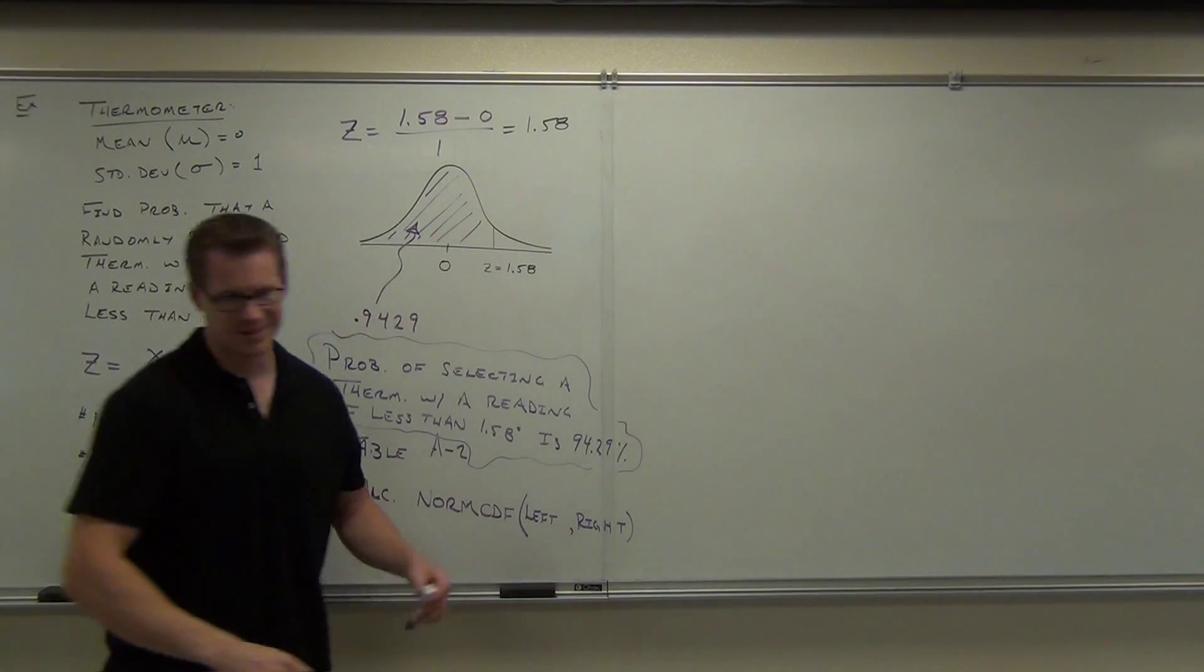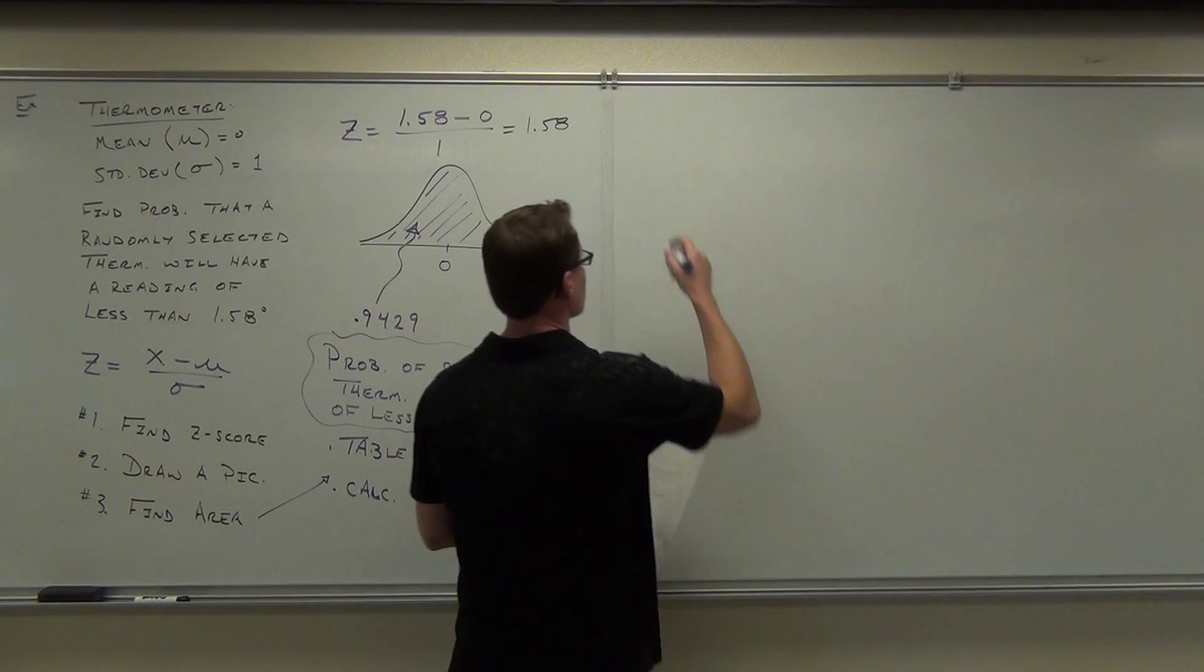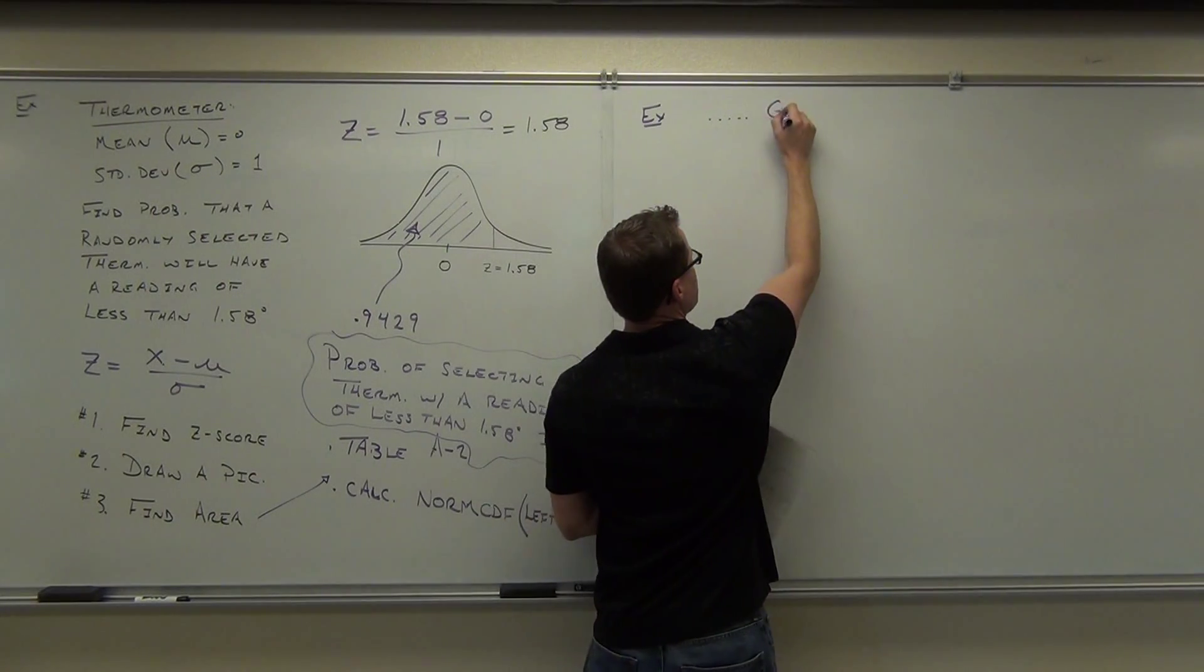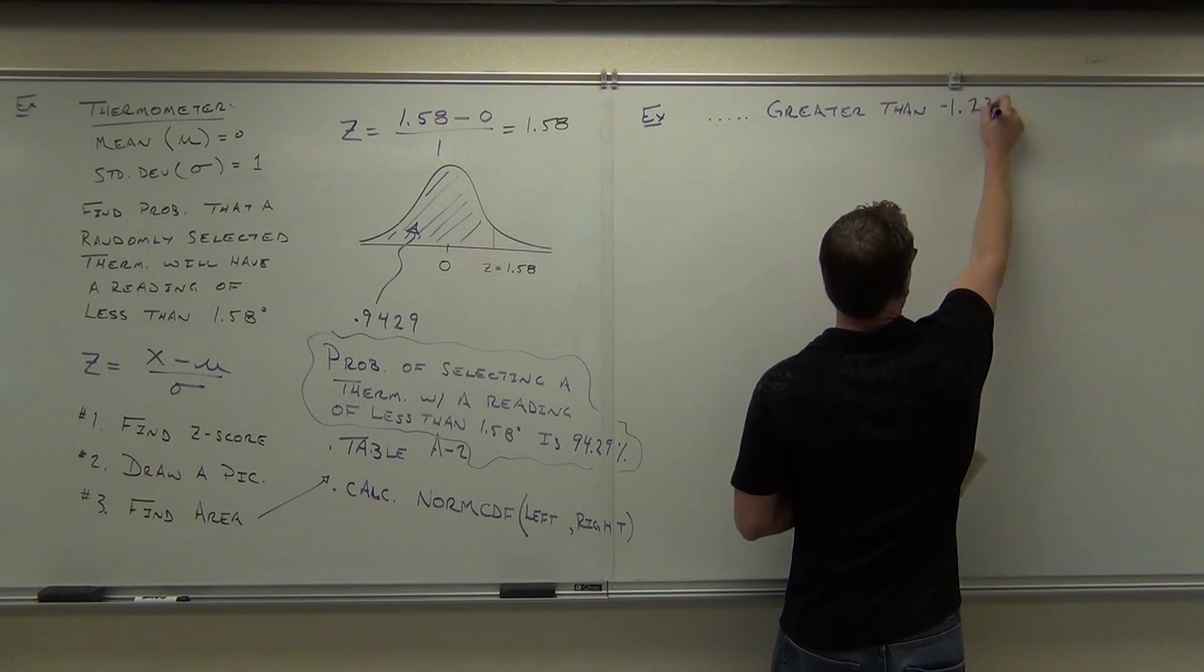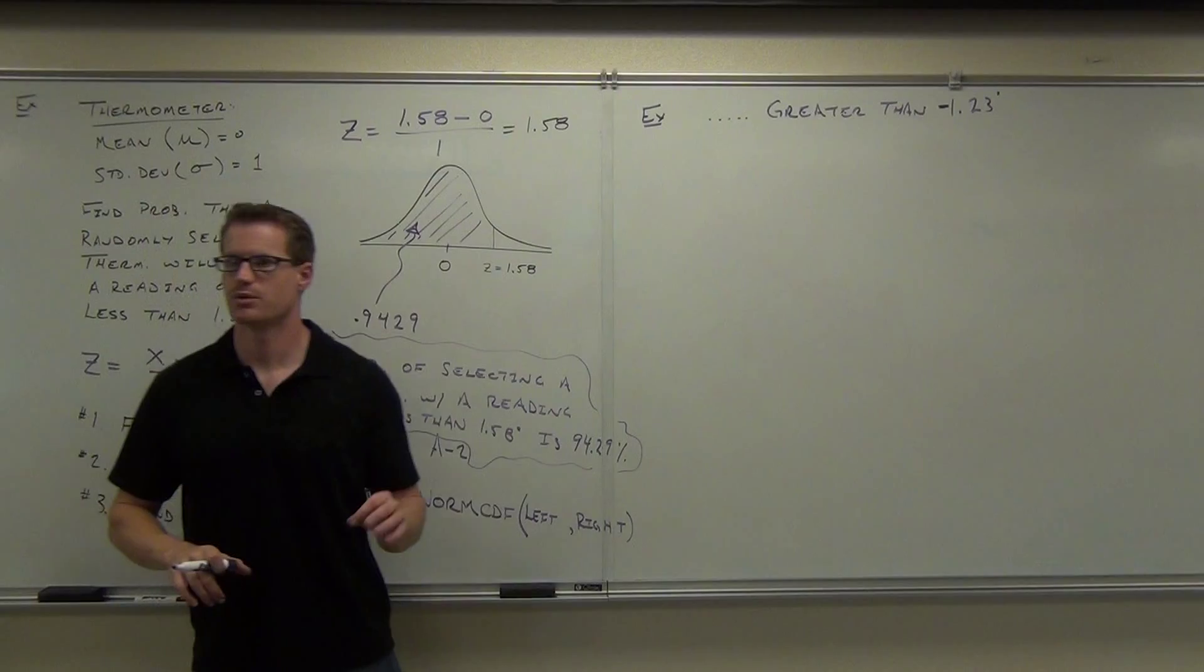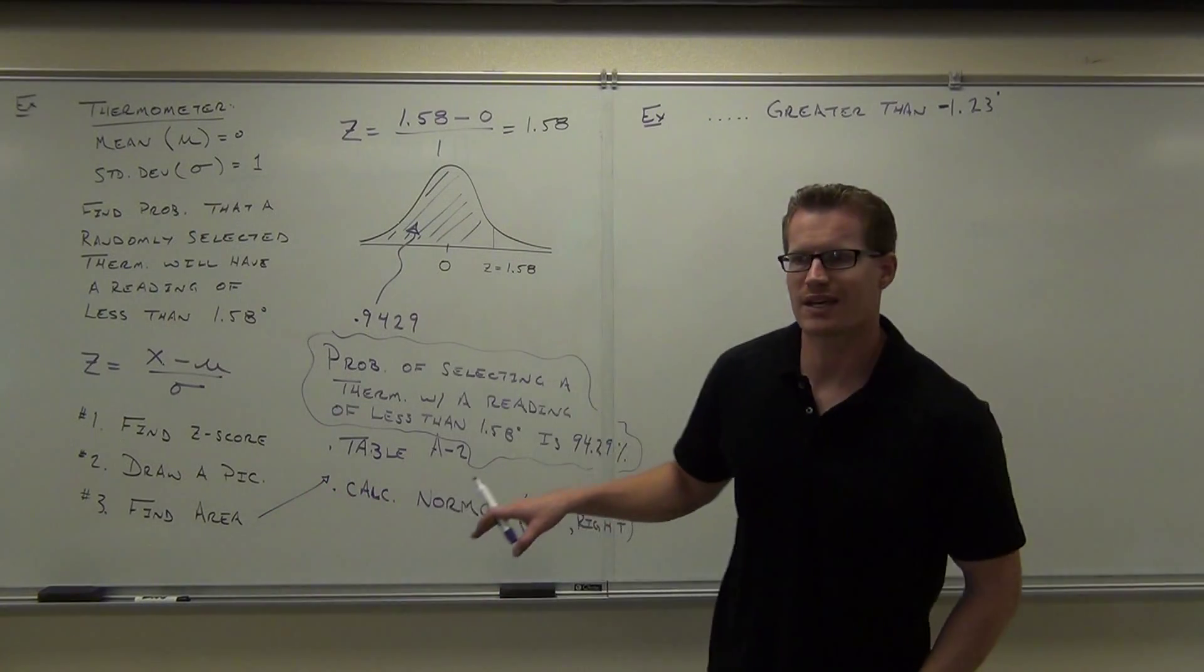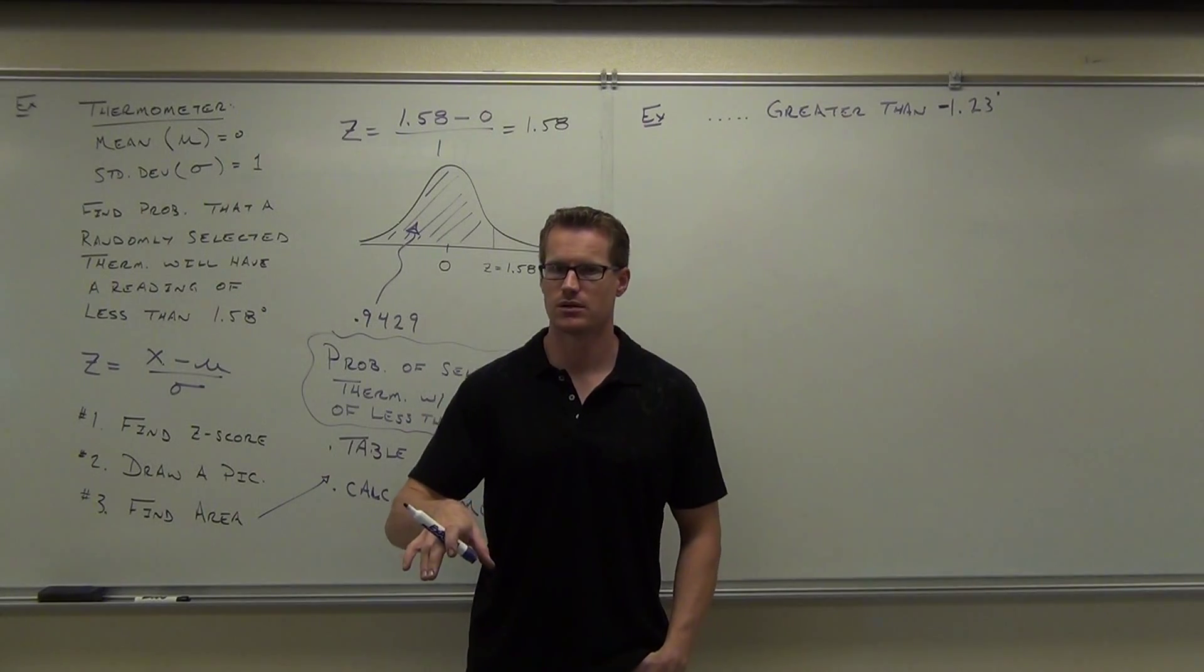Let's try a few more examples. Same question. Find the probability with the same information that a thermometer is going to have a reading, let's do greater than. Greater than negative 1.23 degrees. Notice that when you dump a thermometer in a bucket of water below freezing, below zero would be negative. Let's go through the whole process. What's the first thing we should do if I give you this type of problem? Z-score. Because that's going to translate a normal distribution into a standard normal distribution.